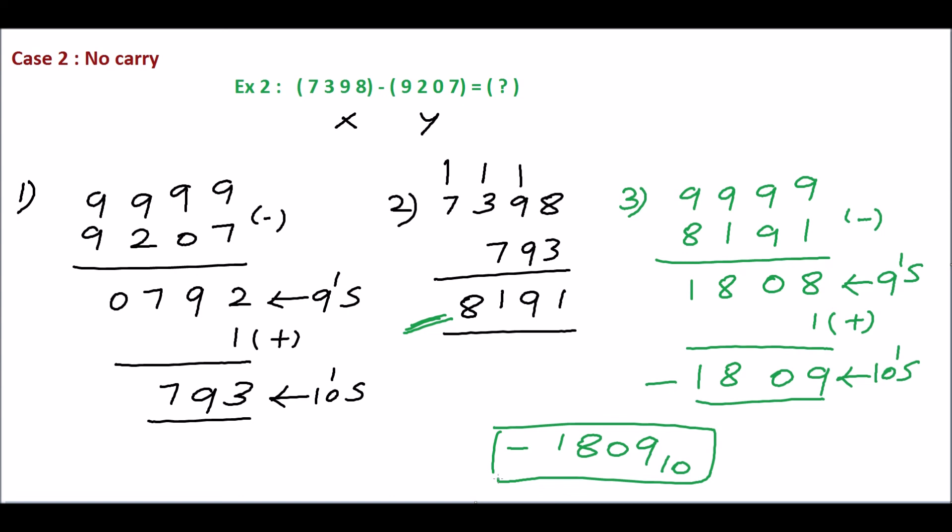To summarize the steps: First, find the 10's complement for the subtrahend. Then add the first number and the 10's complement of the subtrahend. If a carry is produced in the addition, discard the carry. Otherwise, take the 10's complement for the sum and assign the negative sign. Thank you.